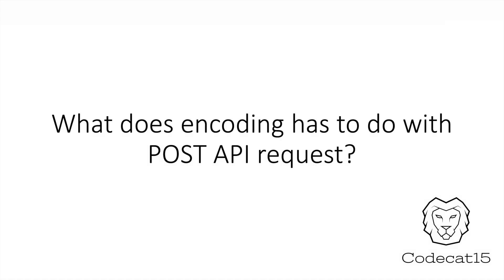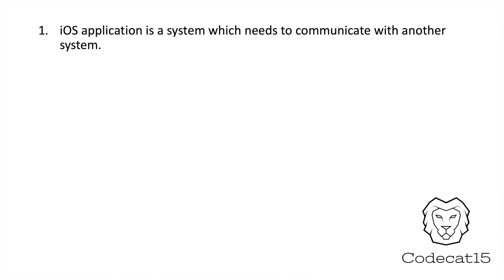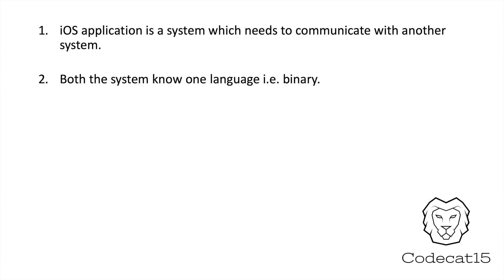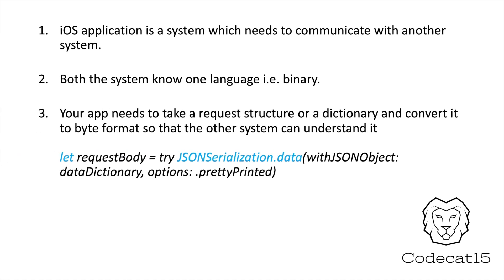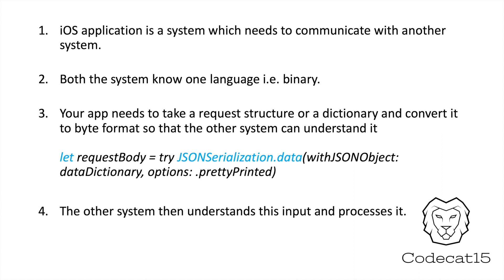Now the question is: what does this have to do with us? Your iOS application is a system and you have to communicate with another system. So before you send information to the other system, your request should be in a binary format, because computers across the globe understand only zeros and ones — that is binary. In our POST video we saw a piece of code where we had a data dictionary that we converted using JSON serialization, because the API on the other side works with binary.